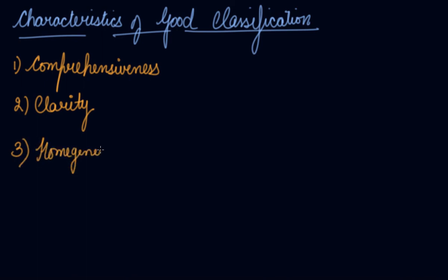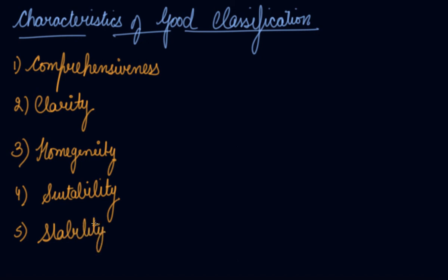Third is homogeneity — the class should be homogeneous and should include all the homogenous or similar items. Fourth is suitability — the data collected and classified accordingly should be suitable enough to draw results out of it. Fifth is stability — a particular kind of investigation should be based on the same set of classification and this base should not be changed with each investigation. Sixth is elastic — there should be scope for change in the classification matching with the change in the purpose or objective of the study.